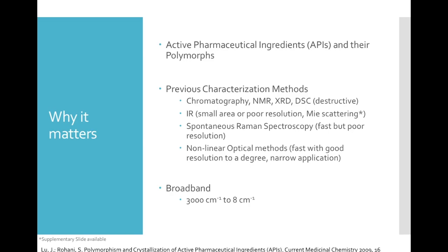Active pharmaceutical ingredients such as IMC come in different forms in the solid state — this is called polymorphs. You can have amorphous forms and you can have crystalline forms, and within that you can have different crystalline structures. The different forms of drugs have different properties, and these differences can alter the effects that the medicines have on patients.